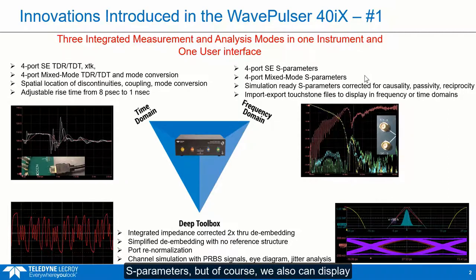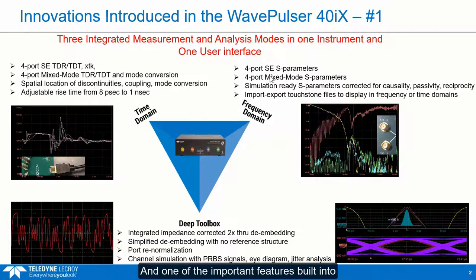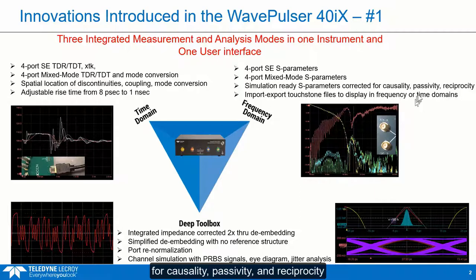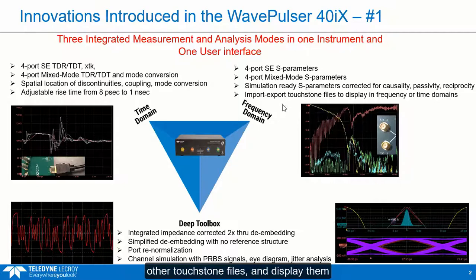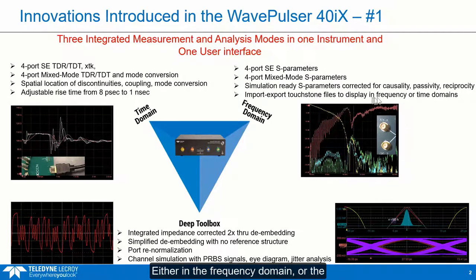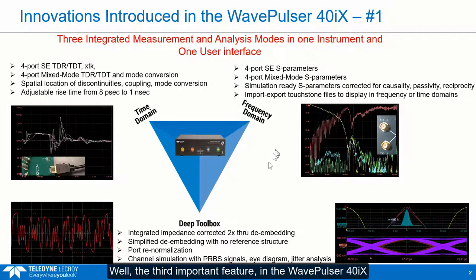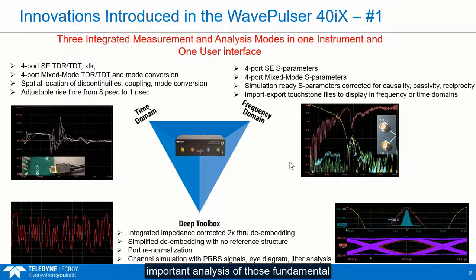We can also display the common signal components and the mode conversion terms. One of the important features built into the WavePulsar 40IX is the ability to take those measurements and correct them for causality, passivity, and reciprocity so that we deliver simulation-ready S-parameters. In addition to performing the measurements and doing the display, we can also import other touchstone files and display them along with the measured results, either in the frequency domain or the time domain. The third important feature is a very deep toolbox that allows us to do important analysis of those fundamental measurements.